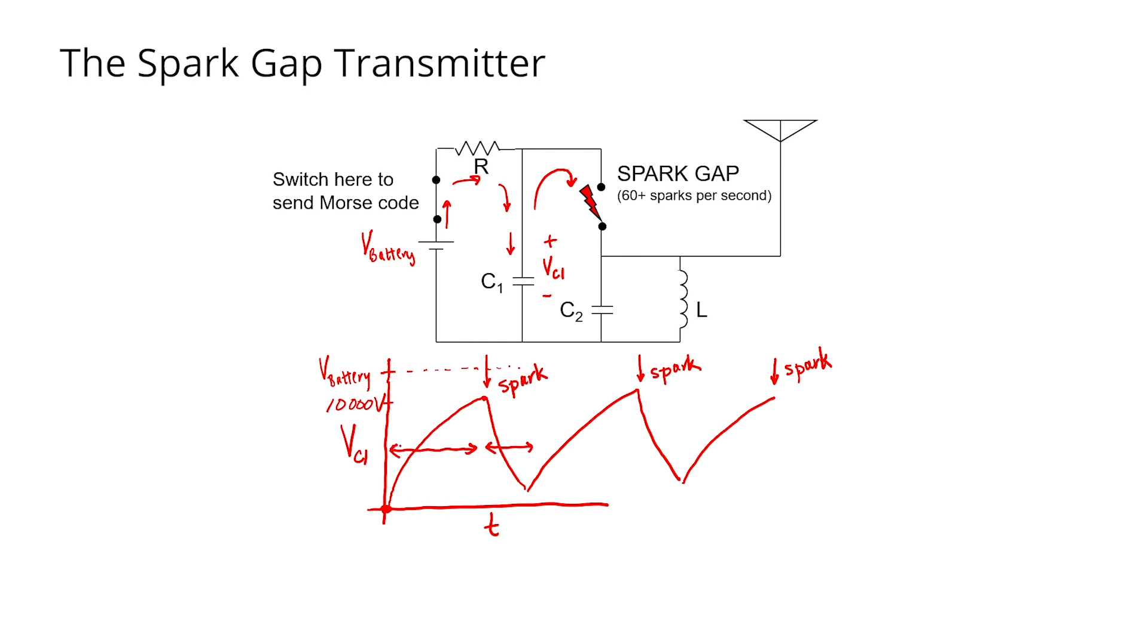During the time where capacitor C1 is charging and there's no spark, we now have pumped energy into our tank circuit, and then that can radiate away through the antenna in a sine wave which slowly decays. So what we hope is that the sparks happen often enough to continuously pump enough energy into our tank circuit in order to get a roughly continuous amount of power radiated out of the antenna.